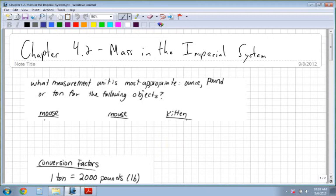Chapter 4.2 is mass in the imperial system. We're going to look at what measurement unit is appropriate for each one: the moose, mouse, and the kitten, and we're going to look at ounces, pound, or ton.